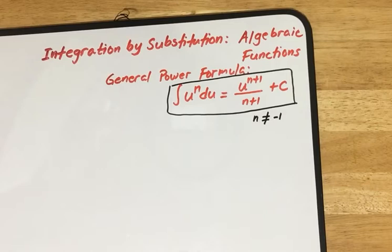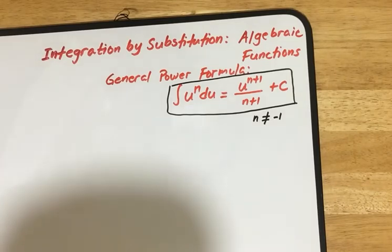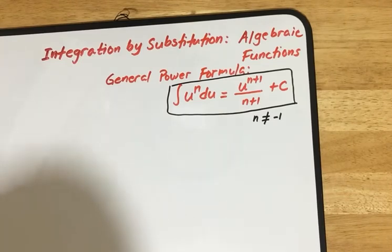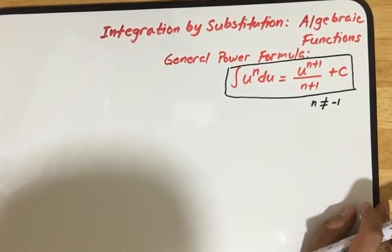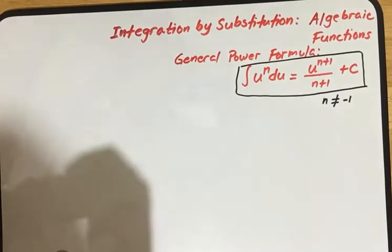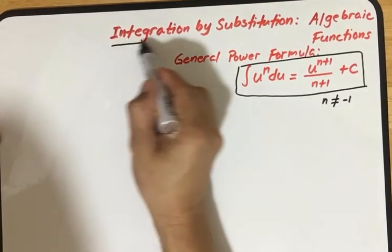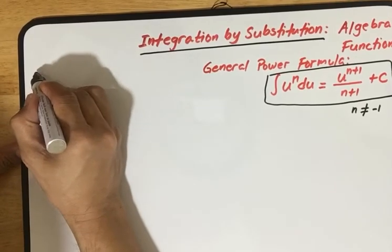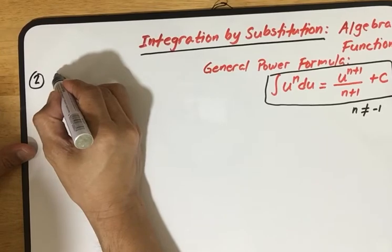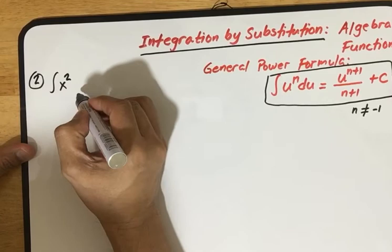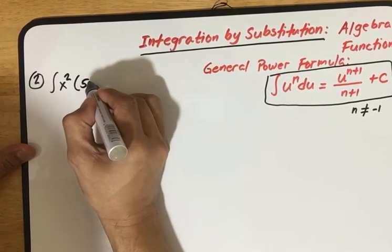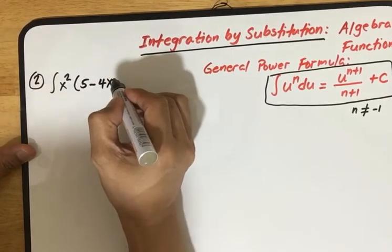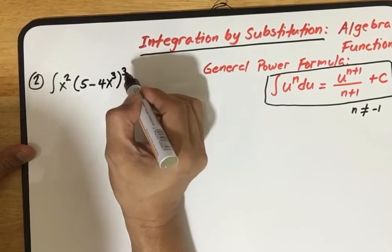Last time we solved one example. Today I'll give you one more example in this video, and another example in a separate video so it won't take too much time. The second example today will have a very long solution. So this is our example number two for integration by substitution: the integral of x squared times (5 minus 4x cubed) raised to the power 3, dx.